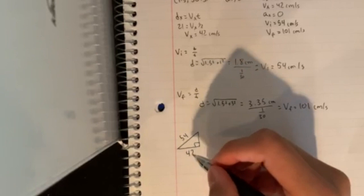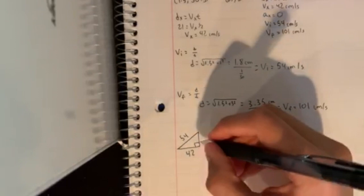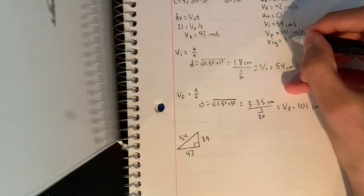Now if we use Pythagorean theorem, we get 54 squared minus 42 squared. And the square root of that comes out to be 34. So now we got that v-initial y is around 34 centimeters per second.